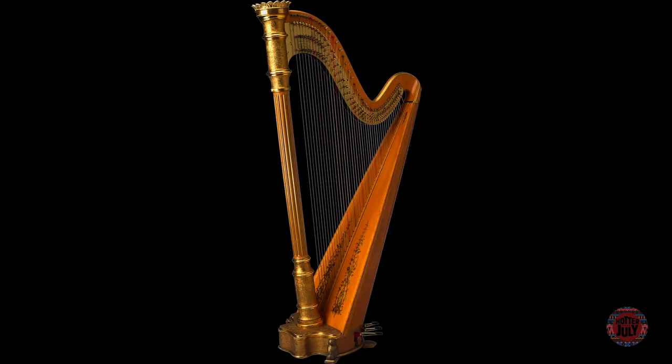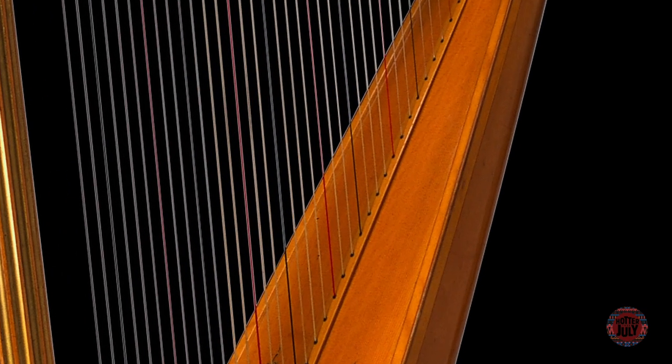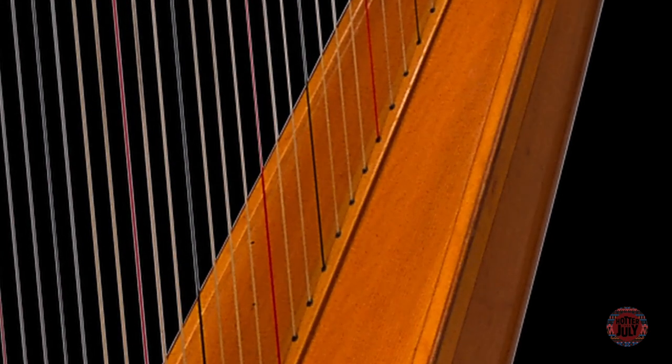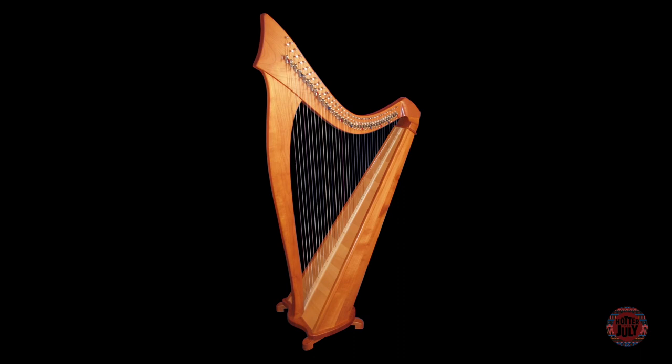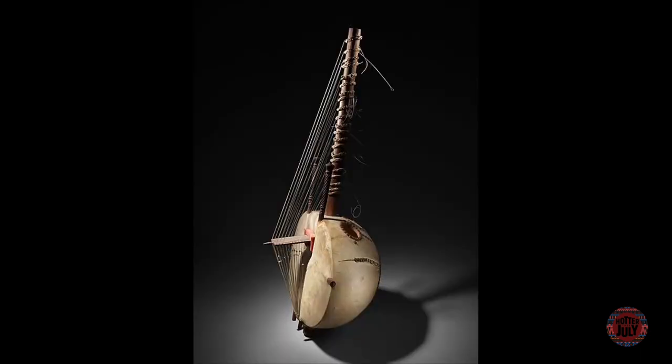Harps are instruments with many strings running at an angle to the soundboard, in contrast to the zither whose strings typically run parallel to the soundboard. What's a soundboard? Keep watching and you'll soon find out. Examples of harps include the Celtic harp, concert harp and kora.